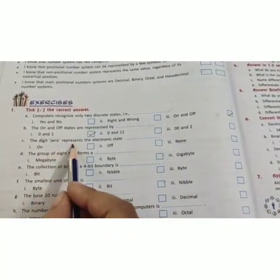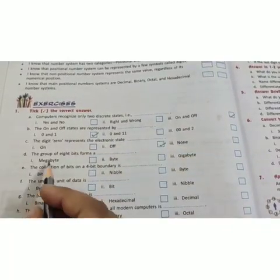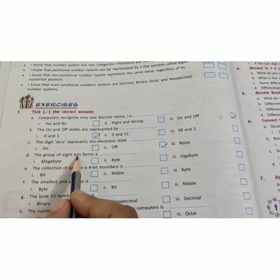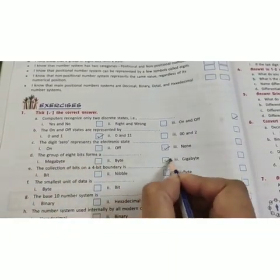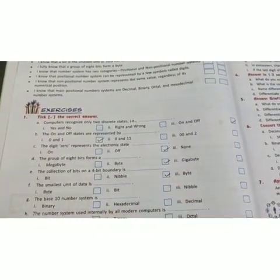The digit 0 represents the electronic state off. The group of 8 bits form a byte. A collection of bits on a 4-bit boundary is nibble.